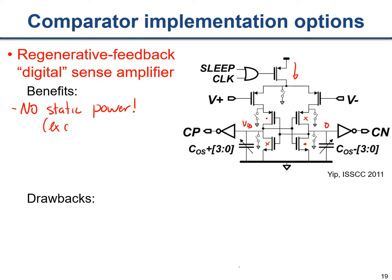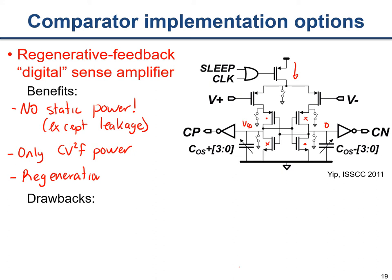There is no static power for this circuit - only leakage power exists to first order, which we can never totally eliminate. As a result, the only power the circuit consumes is CV²F dynamic power. Additionally, the regenerative aspect of the cross-coupled structure offers tremendously high gain: a very small input differential signal, through this positive feedback mechanism, resolves into a logic one or logic zero extremely quickly. These two benefits essentially solve all the problems of the prior amplifier-based circuit.